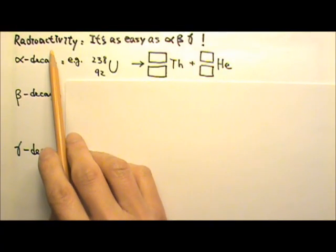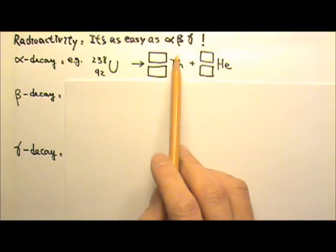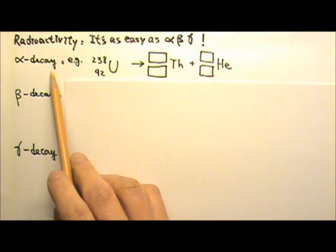Now let's look at radioactivity. It is as easy as alpha beta gamma. Let's start with the alpha decay.